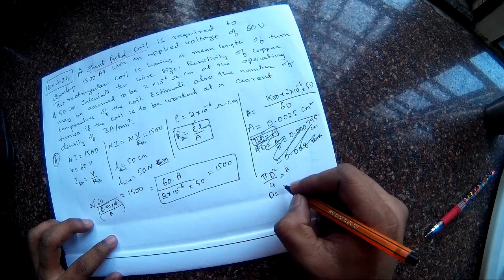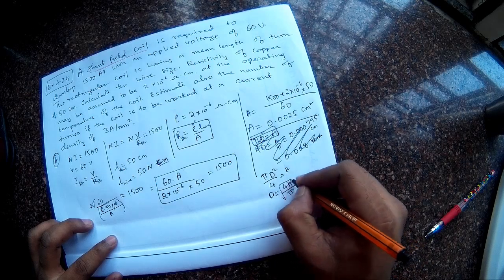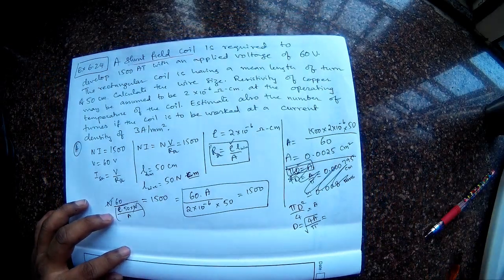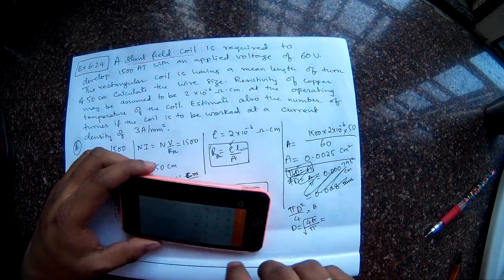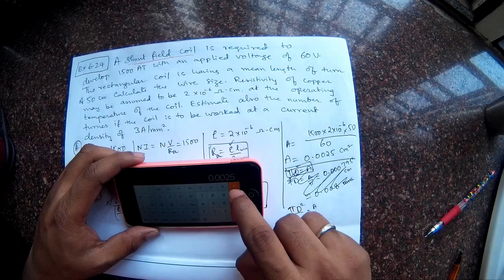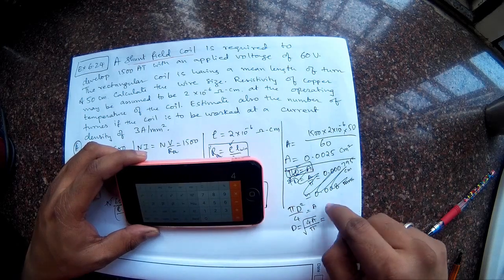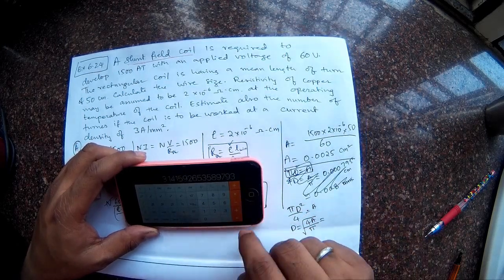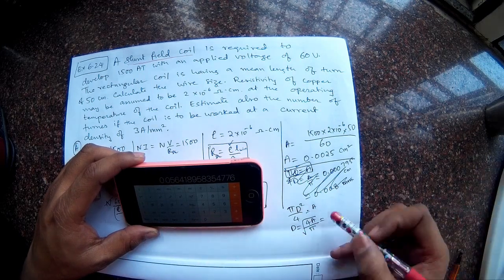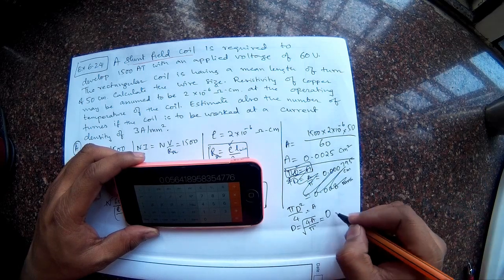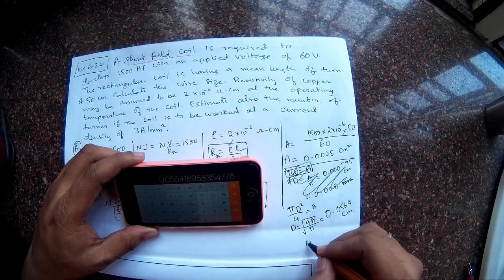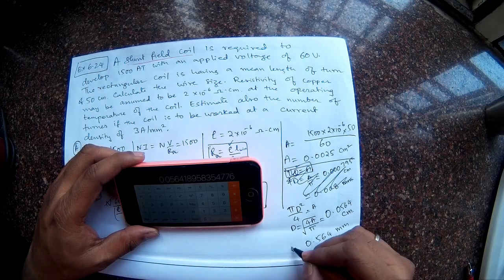So let's calculate the area. So area is 0.0025 centimeter squared, multiplied by 4 divided by pi. This quantity I will apply square root for that. So now I get the answer. That is 0.0564 centimeters. So this is the diameter, or 0.564 mm is the diameter of the wire.